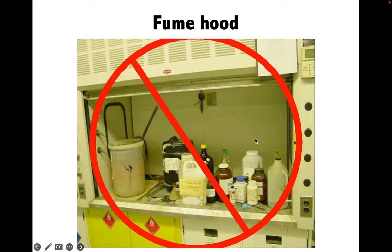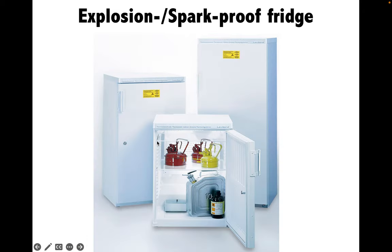The fume hood is not the place to store chemicals or equipment — the space must always be kept clean and free. The fridge is another piece of equipment that many people neglect. Storing flammable chemicals like pentane, benzene and xylene is not allowed in a non-spark-proof fridge. A spark-proof or explosion-proof fridge is required for those chemicals instead.